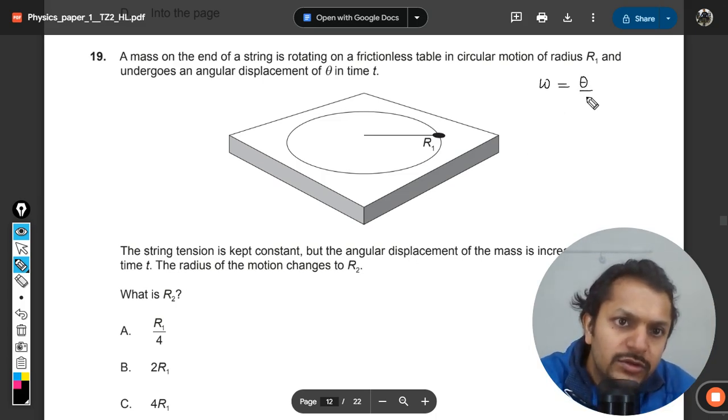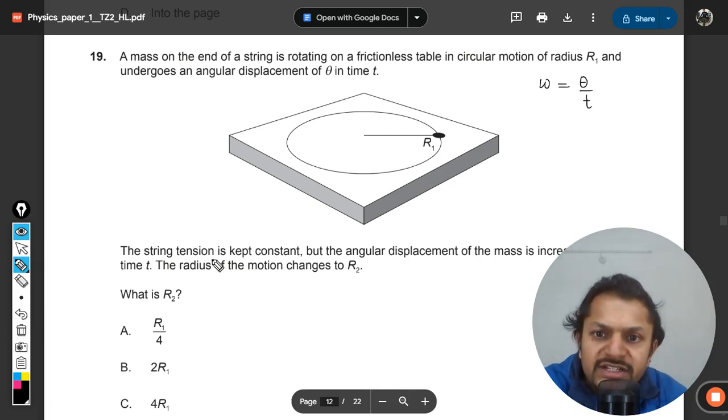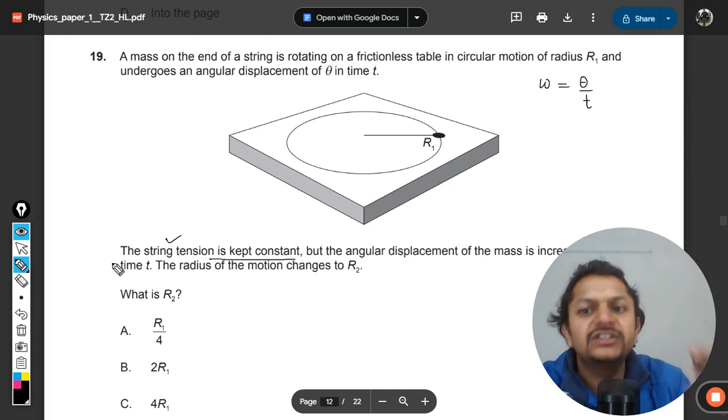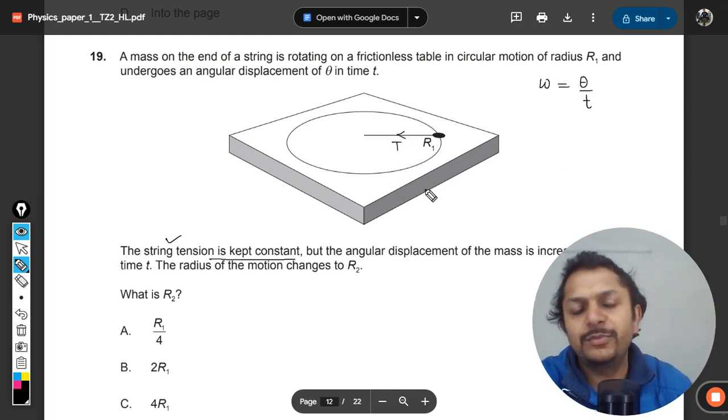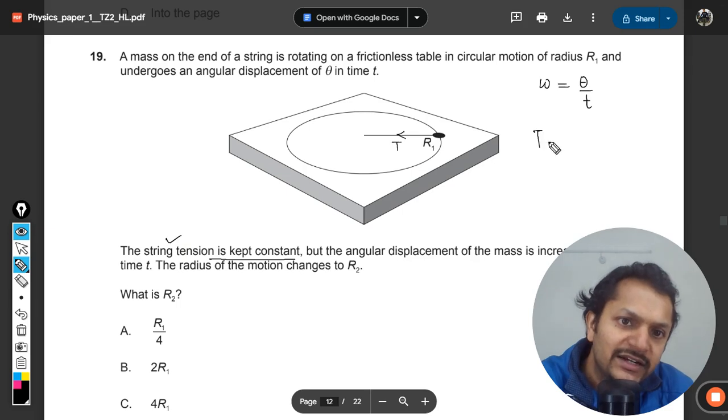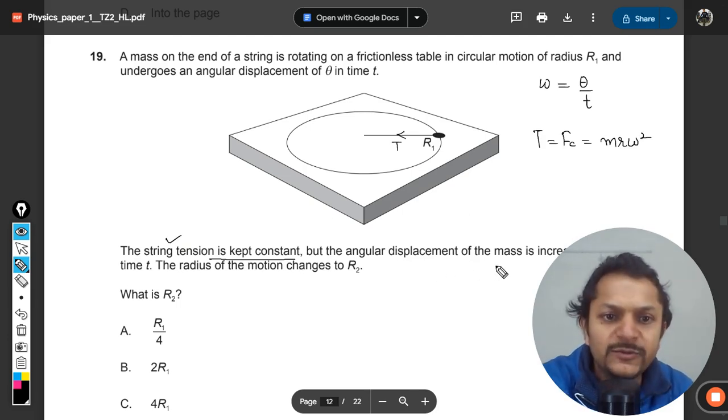Instead, they're talking in terms of theta and t, so this will be equal to the angle traversed divided by the time it has taken. The string tension is kept constant. Now, the tension in the string is kept constant, so tension is acting like centripetal force, so I can say that the tension is equal to centripetal force, which is given by mr omega square.